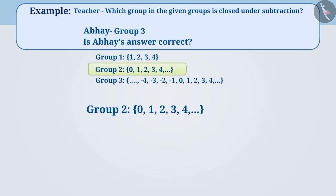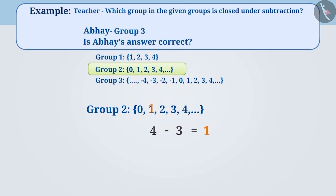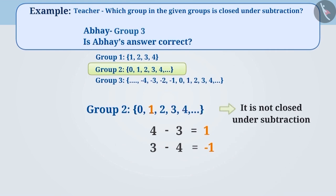Let's talk about group 2. Can you tell me whether group 2 is closed under subtraction? One of the numbers of group 2, which is 1, is obtained by subtracting the smaller number from the larger number. But while subtracting the larger number from the smaller number, we get minus 1, and minus 1 is not present in this group. For this reason, group 2 is not closed under subtraction.